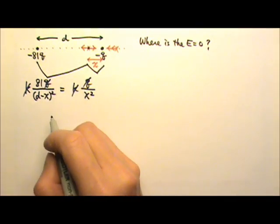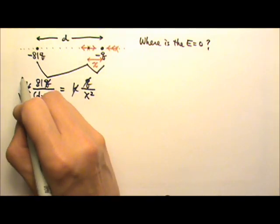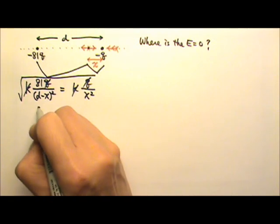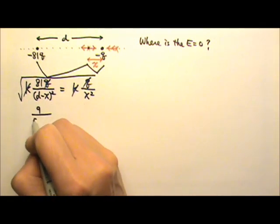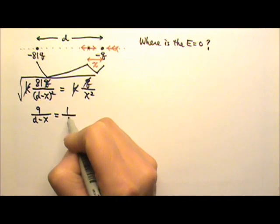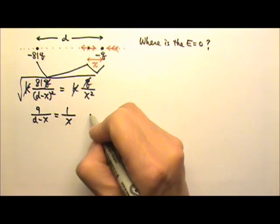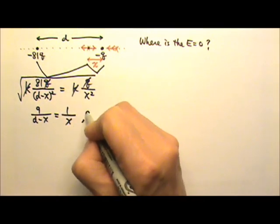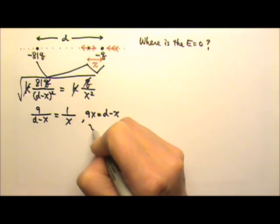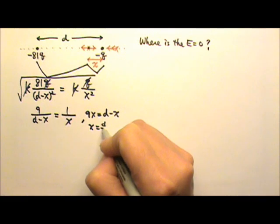To avoid a quadratic equation, I'm going to take the square root first. So I get 9 divided by (d minus x) equals 1 divided by x. Cross multiplying gives 9x equals d minus x, so x equals one-tenth d.